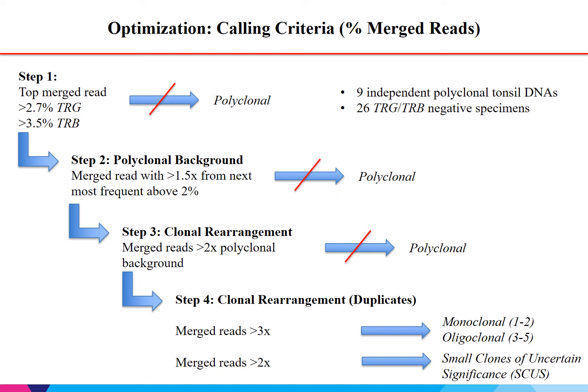The next step was to detect clonal rearrangements. If merged reads were greater than 2x the polyclonal background, the sample moved to step 4. However, if no reads were found to be 2x higher than the polyclonal background, the sample was called polyclonal. Finally, if merged reads were 3x the polyclonal background and we found 1 or 2 clonal rearrangements, the sample was called monoclonal; 3 to 5 was oligoclonal. If the merged reads were only 2x the polyclonal background, we coined the terminology "small clones of uncertain significance" or S-CUS.